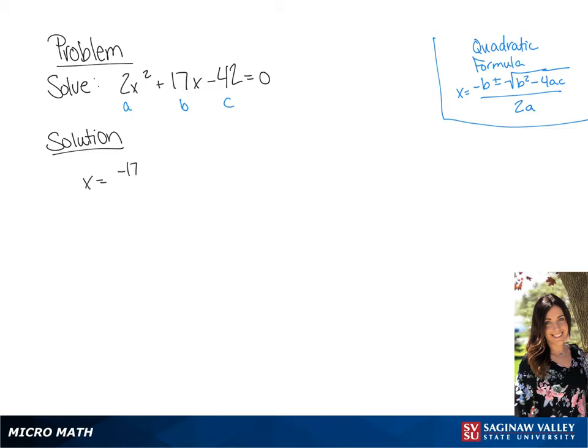If we do that, it's going to give us x equals negative 17 plus or minus the square root of 289 plus 336 all over 4.